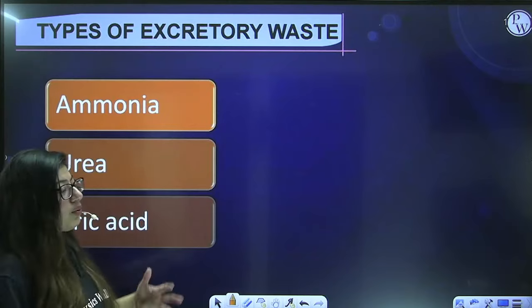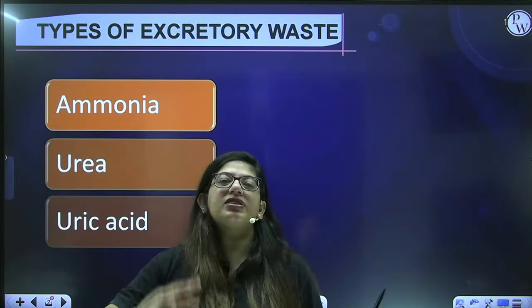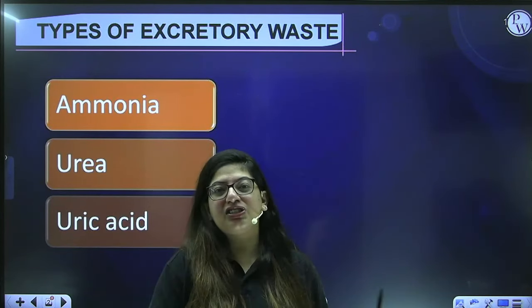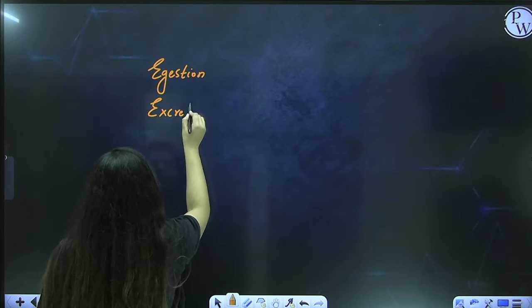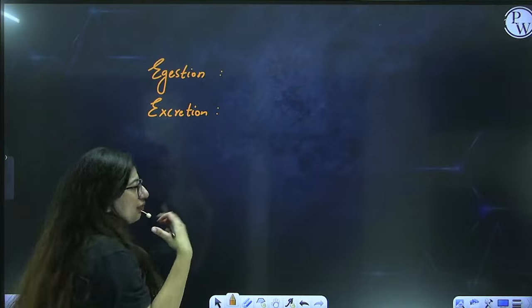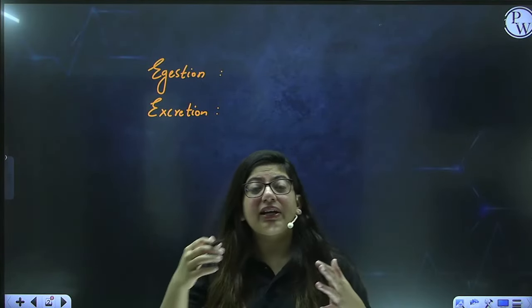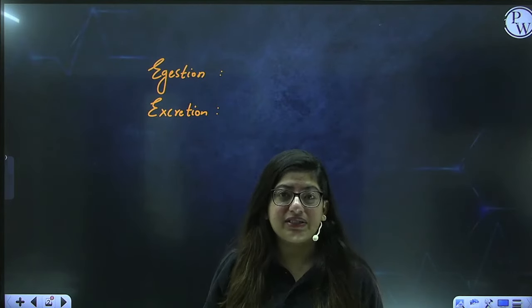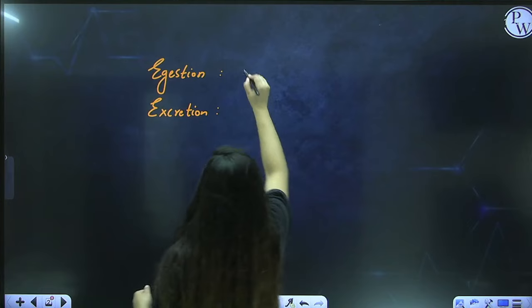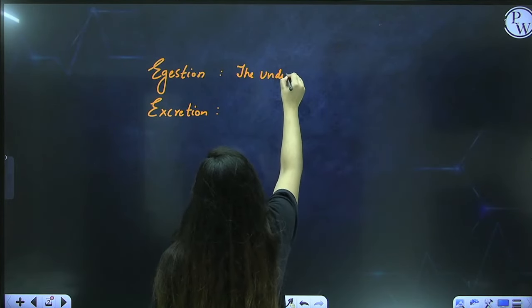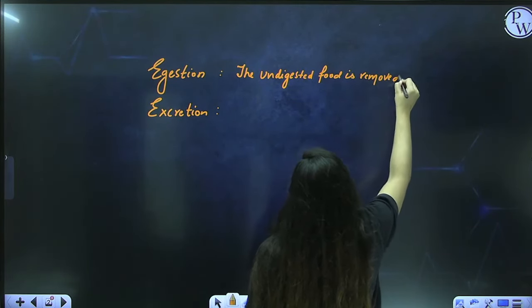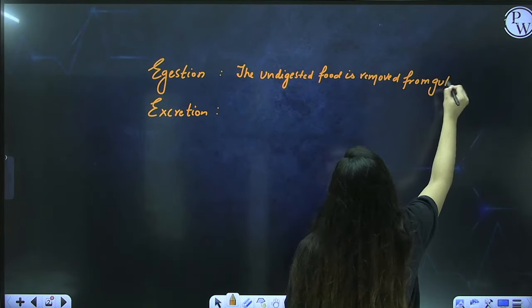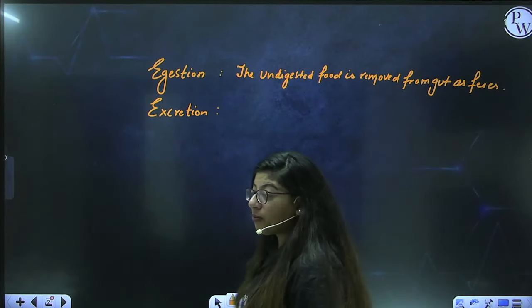First, we will talk about the excretory system and the difference between excretion and ejection. You must have come across these two words. Ejection we have done in the digestive system, and the other word is excretion. Whenever you eat food and that food does not get digested, it will come out from your body in the form of feces — that is called ejection. So in ejection, the undigested food is removed from the gut as feces.